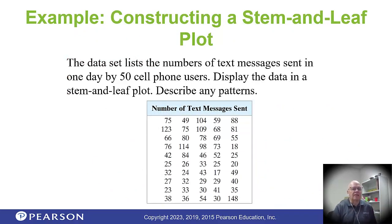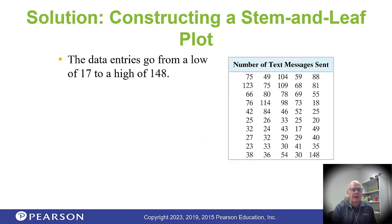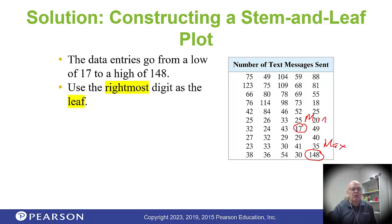Here's another data set: 50 cell phone users. We want to display that in a stem and leaf plot and describe any patterns. The data entries go from 17, which is the minimum, all the way up to 148, which is the maximum. We're going to use the rightmost digit as the leaf — for example, the leaf for 148 is 8, and the stem is 14.